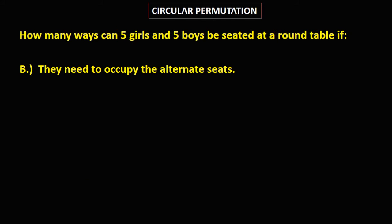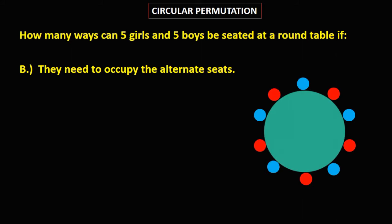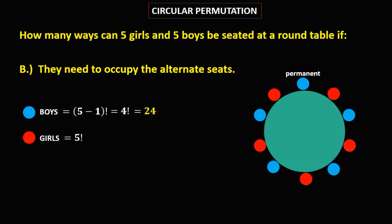For this problem, boys and girls need to occupy alternate seats. One seat is permanent — assume the permanent seat belongs to the boys. The formula for the boys is (5 minus 1) factorial, which equals 4 factorial, equal to 24. For the girls, that's 5 factorial, which equals 120.